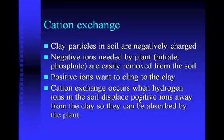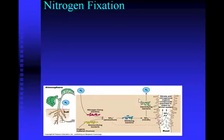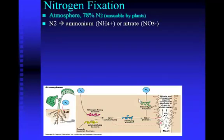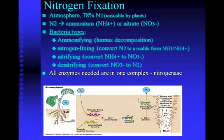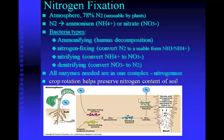Nitrogen fixation is crucial to plants. The atmosphere is 78% nitrogen, but it's in the form of N2, which has a triple bond and is unusable by plants. The plant relies on different nitrogen-fixing bacteria that can take the N2 from the air and change it into ammonia or nitrate ions the plant can absorb. Different kinds of bacteria are involved in this nitrogen cycle: ammonifying, nitrogen-fixing, nitrifying, and denitrifying bacteria — all the enzymes needed usually occur in one complex named nitrogenase. Crop rotation helps preserve the nitrogen content of the soil; every third or fourth year a farmer can plant legumes that add nitrogen back to the soil.